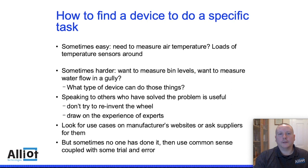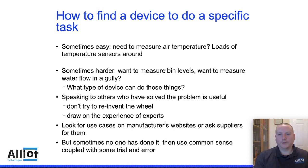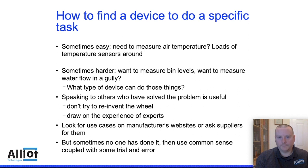So how do you find a device that's going to do a specific task? Sometimes that's really easy — if you want to measure temperature, there are lots of temperature sensors and almost any company making LoRaWAN sensors will sell you one. But sometimes it's a lot harder. If you want to measure bin levels or water flow in a gully, what type of devices can you find to do those things? Every single job is going to be different, but the advice I can give is: speak to other people. The popularity of LoRaWAN means that lots of people will have quite likely solved the problem you're looking at already. You can use events like this, Google search, look at manufacturers' websites. Don't try to reinvent the wheel — talk to suppliers and use the networking opportunities at events such as this.